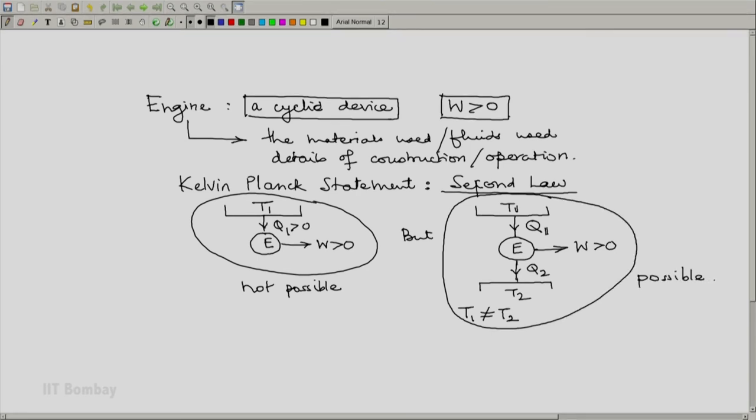While doing this, we used a method where we assume something otherwise—for example, if you assume that Q2 is also in this direction, then this will not be an engine because it would violate the Kelvin-Planck statement.